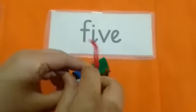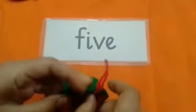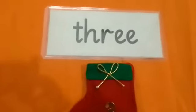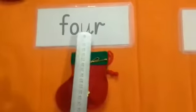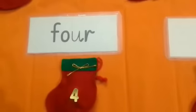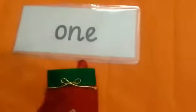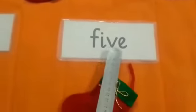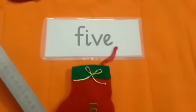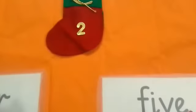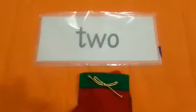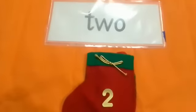Now, can you tell me the spellings of 3? T-H-R-E-E 3. Can you tell me the spellings of 4? What are the spellings? F-O-U-R 4. Can you tell me the spellings of 1? O-N-E 1. Can you tell me the spellings of 5? F-I-V-E 5. And the last one — can you tell me the spellings of 2? T-W-O 2. Yes, that's great. Excellent.